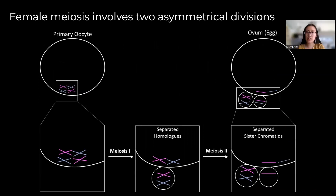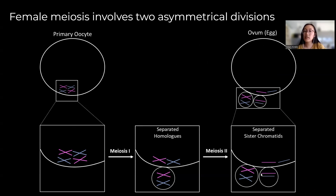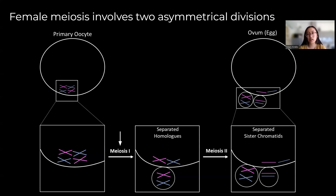First I'll start out with some background info. Female meiosis involves two asymmetrical divisions. Unlike in mitosis where the chromosomes line up in the center of the cell and divide evenly, in meiosis the chromosomes migrate over to the cortex where half of the chromosomes are extruded into a polar body in meiosis 1, and then half of the sister chromatids are extruded into a second polar body in meiosis 2. This results in an ovum with most of the cell's resources so that it is able to further develop. The part we were most interested in was meiosis 1, because any errors in this process can lead to severe developmental defects.